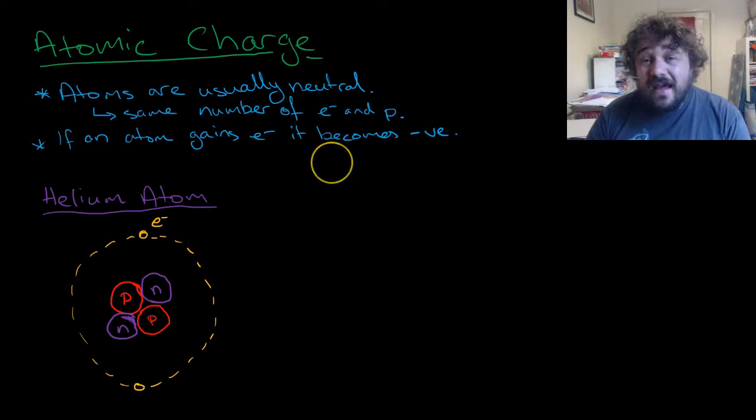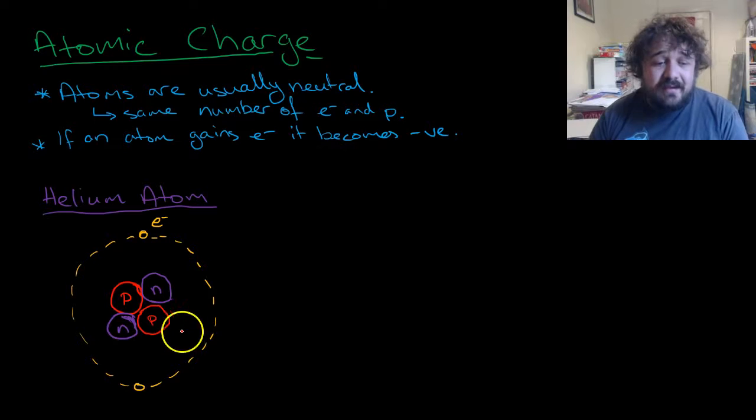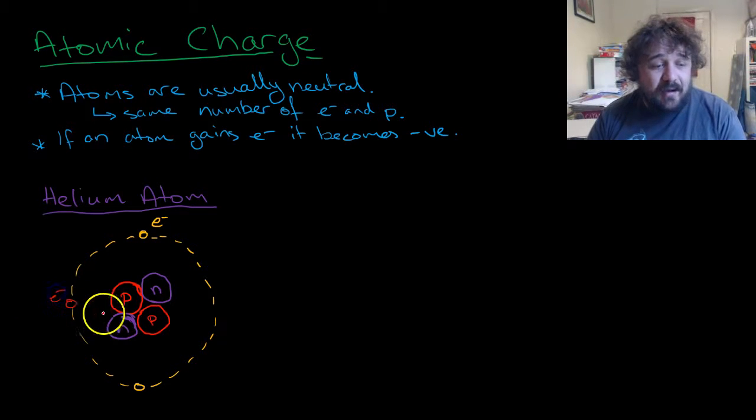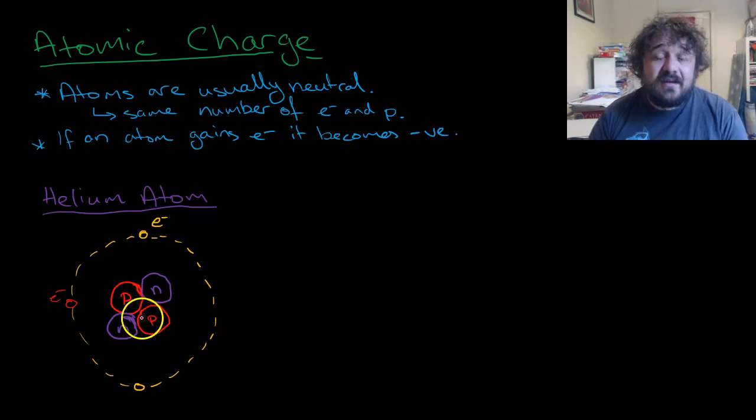And if an atom gains electrons, it'll become negative. So if this atom here scores an extra e-, that means it will have three negative charges, two positive charges, so its overall charge will be minus 1.